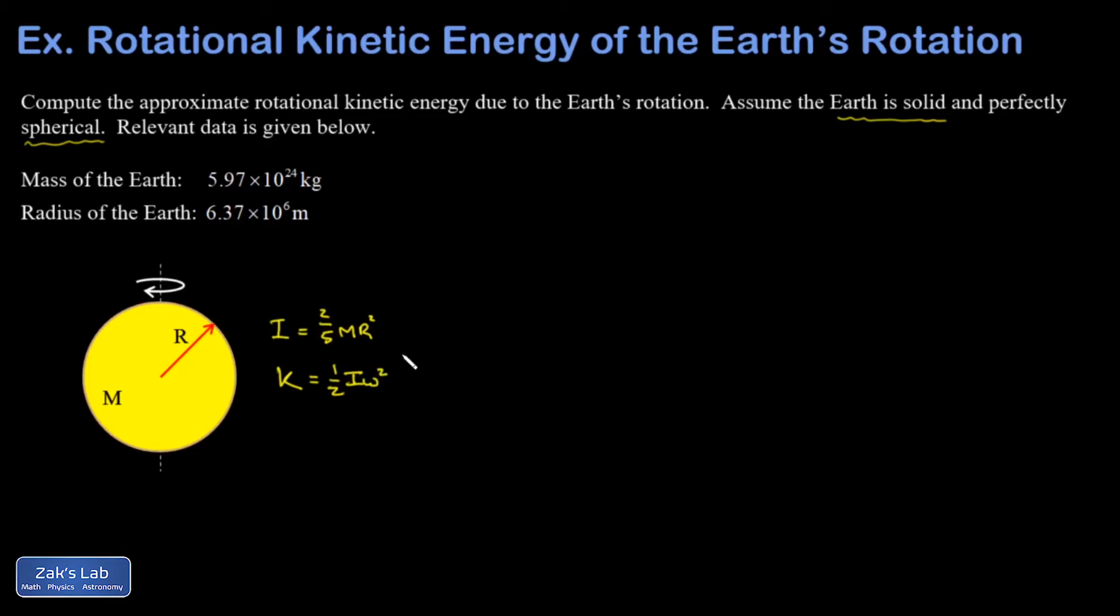So we have everything we need to get the moment of inertia. But what about omega? I need the angular velocity in radians per second.